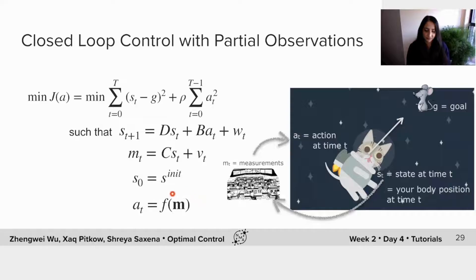So now your a of t is a function not of s of t, but of m of t, of the measurements that we get. So this a of t depends only on these measurements. How would we design a of t?